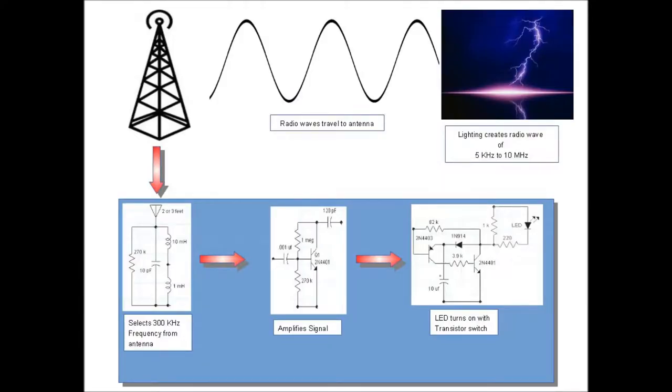This slide shows how a homemade lightning detector works. Lightning creates a radio wave of 5 kHz to 10 MHz. The radio waves travel to the antenna.